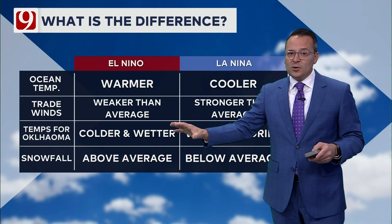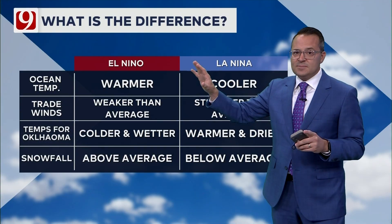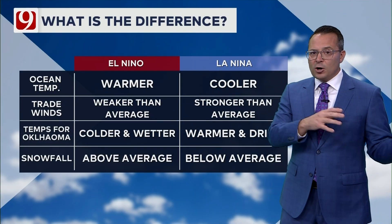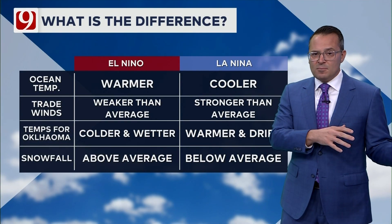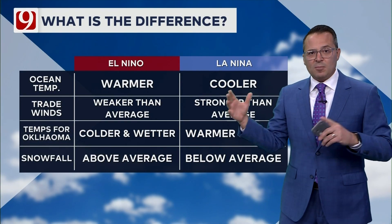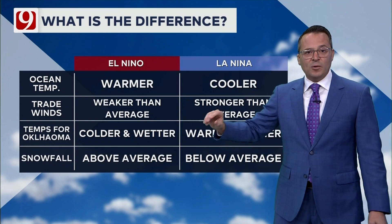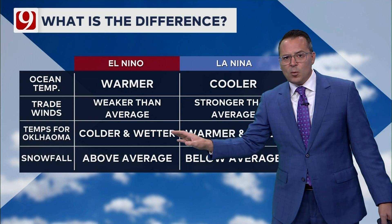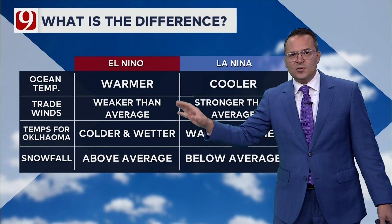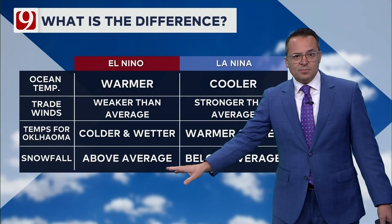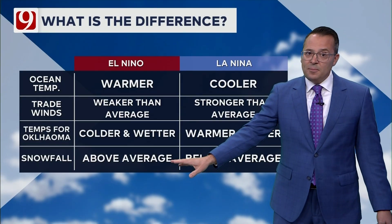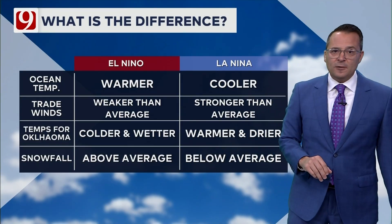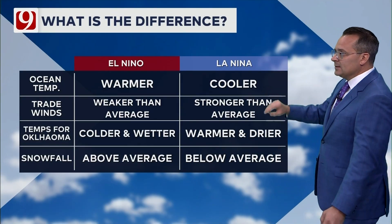Temperatures for Oklahoma — these both affect us stronger during the winter months than the summer months. So in the winter months we're usually colder and a little bit wetter at times with El Niño, which typically produces above average snowfall for us.